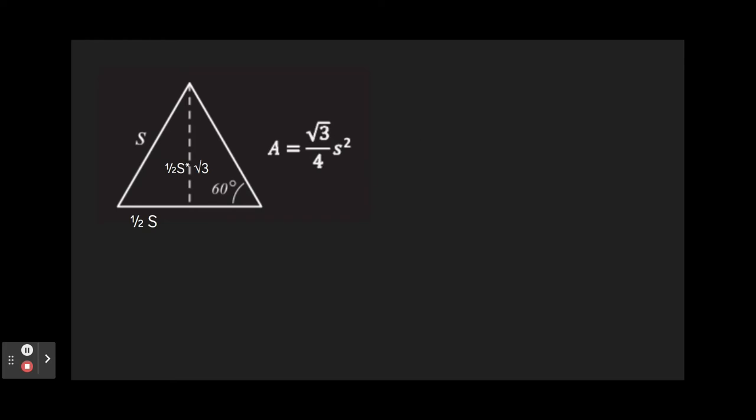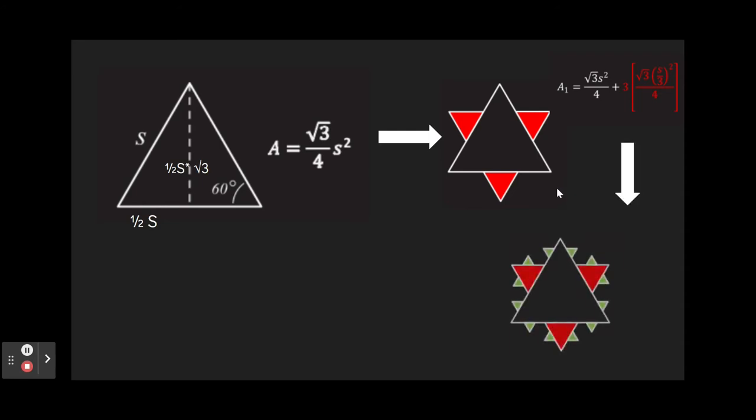Next to find the area of the first iteration, we can add the areas of the smaller triangles. In this case, s is divided by 3 in order to find the length of each side of the smaller triangle. The same area formula is applied, but because there are 3 new triangles colored in red, we must multiply by 3. The same thing is applied here for the green triangles. There are 12 of them, so we multiply by 12, and each of its sides is 1 ninth of the original s.